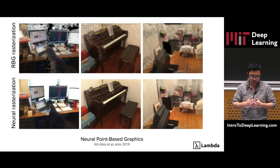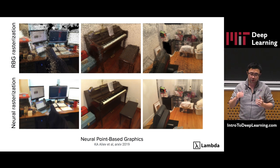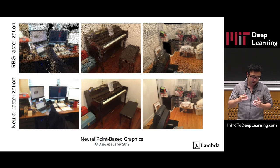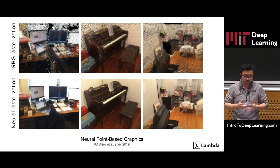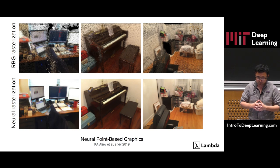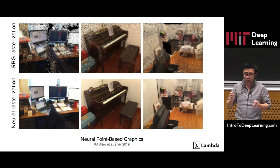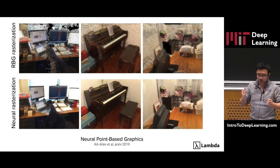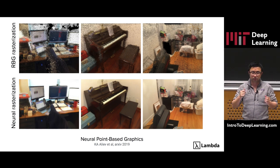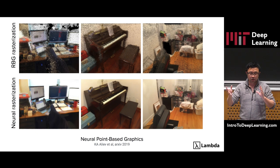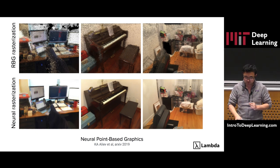The authors use an autoencoder to encode the projected neural descriptor into a photorealistic image. This render network is jointly trained with the optimization of the neural descriptor during training but is frozen during testing. The rendering with the neural descriptor has no holes and the result is in general much sharper. The very cool thing about this method is the neural descriptor is trained to be view-invariant, meaning once it is optimized for a scene, you can render the scene from different angles.